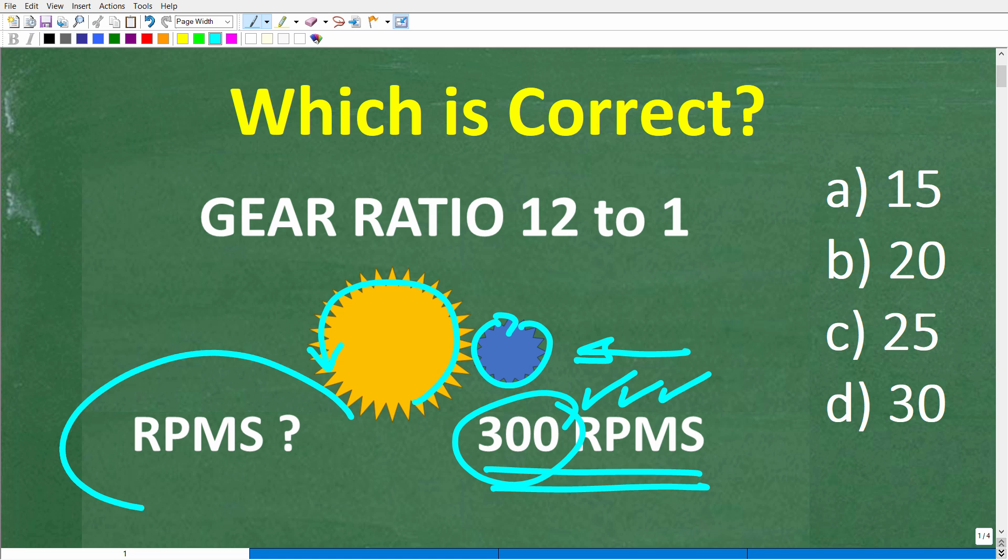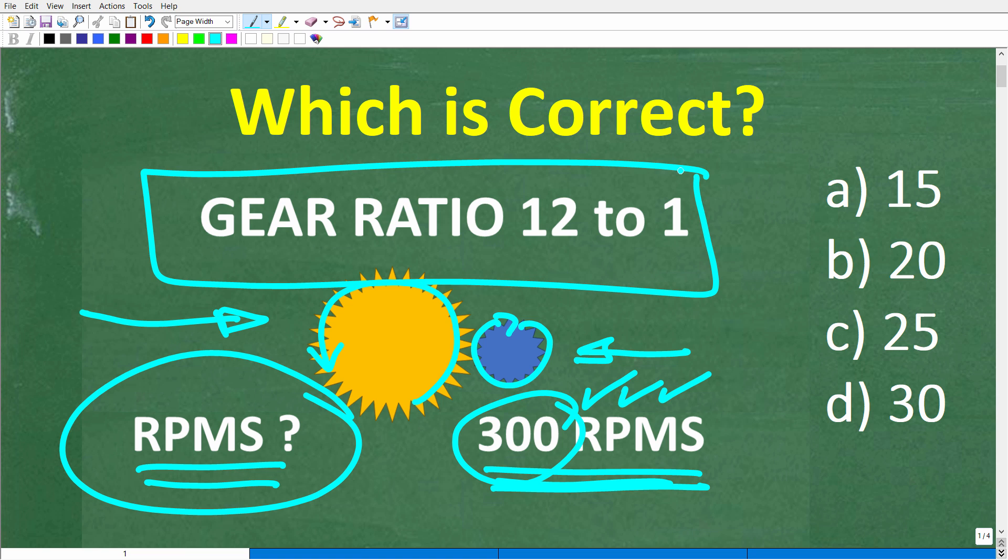What we want to figure out is how many RPMs, how many revolutions in one minute, will the big gear make if it's being driven by the small gear at 300 RPMs? These two gears have a gear ratio of 12 to 1.